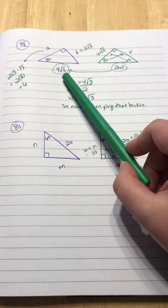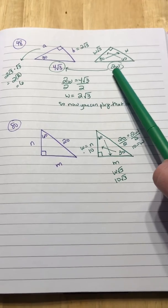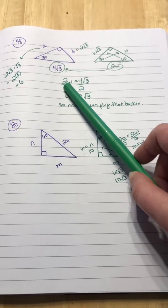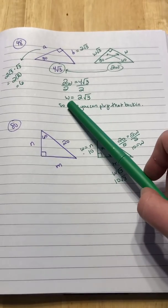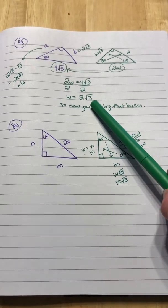All right, they give you a hypotenuse of 4 square root of 3. And you know the hypotenuse is supposed to be 2w. So you're going to do 2w equals 4 square root of 3. Divide by 2 on both sides, and you'll get w equals 4 divided by 2 is 2. Bring down that square root of 3.